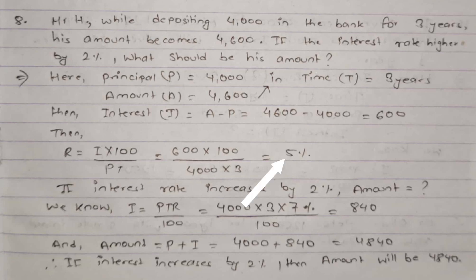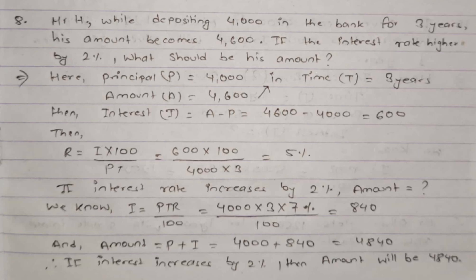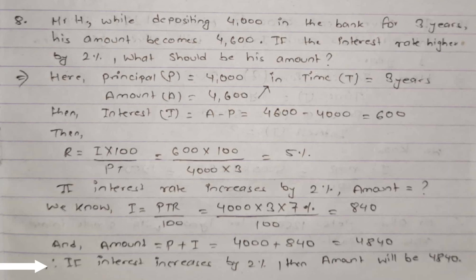According to the question, if the interest rate increases by 2%, the new rate becomes 5% + 2% = 7%. Using I = P × T × R / 100: I = 4,000 × 3 × 7 / 100 = 840. Total amount = principal + new interest = 4,000 + 840 = 4,840. Therefore if the interest rate increases by 2%, the new amount will be 4,840.